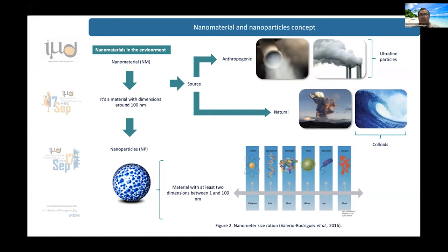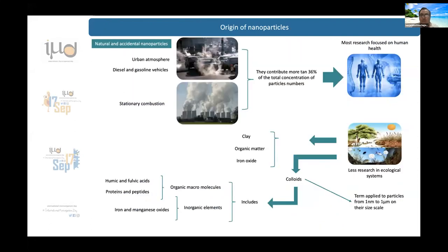Another concept is nanomaterials. A nanomaterial is a type of material which is very small in size, but at this scale the physical and chemical properties change a lot. These nanomaterials can be derived from natural resources but also from anthropogenic sources — for example, exhaust from diesel and gasoline vehicles, or from stationary combustion sources.